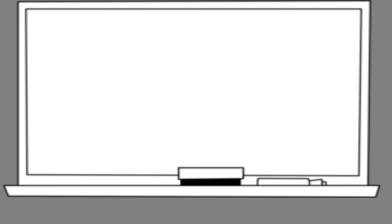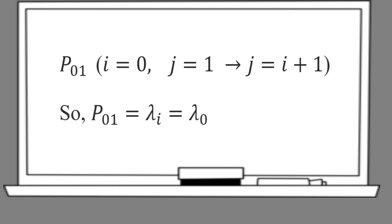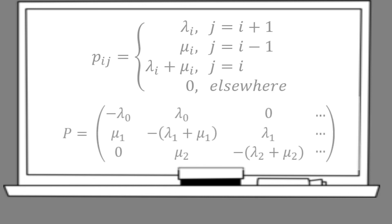For instance, for P_01, we know that j equals i plus 1. Hence, the probability is lambda_i, and since i equals 0, then its probability equals lambda_0. Following the piecewise function P_ij, we can obtain probabilities for the rest, then we can find the transition probability matrix.